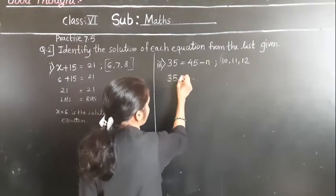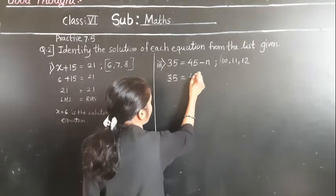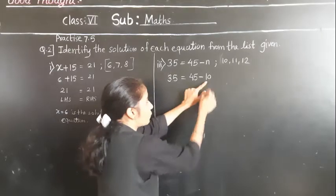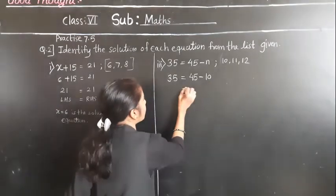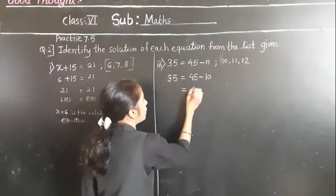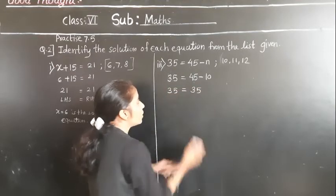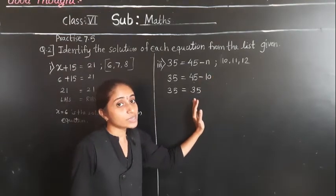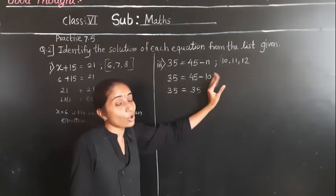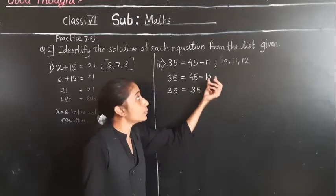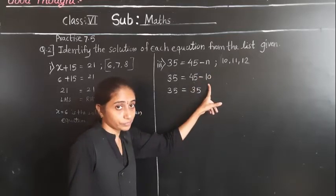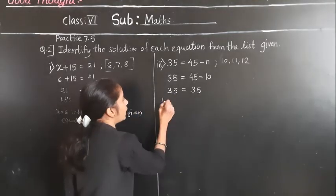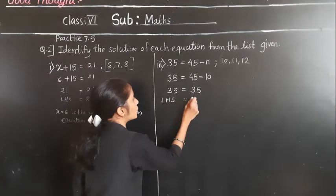35 is equal to 45 minus 10 — putting 10 in the place of N. 45 minus 10 gives 35. Both sides are equal. By which number we got both sides equal? When I put 10 in the place of N, both sides are equal. LHS is equal to RHS.